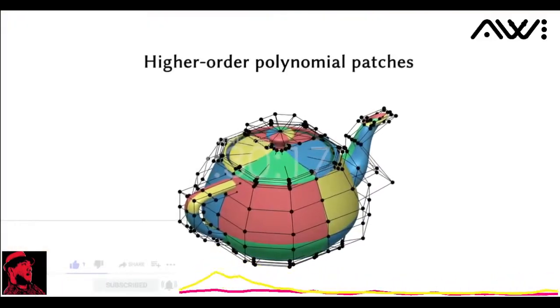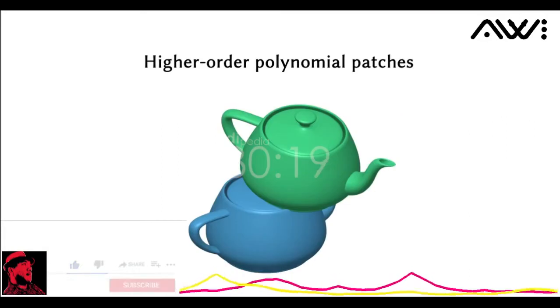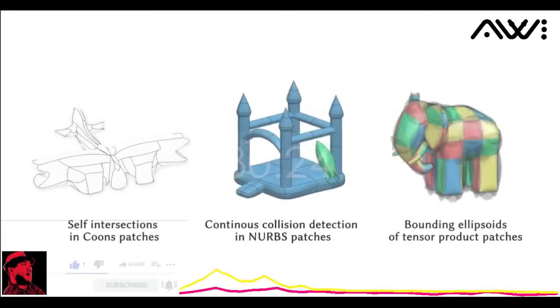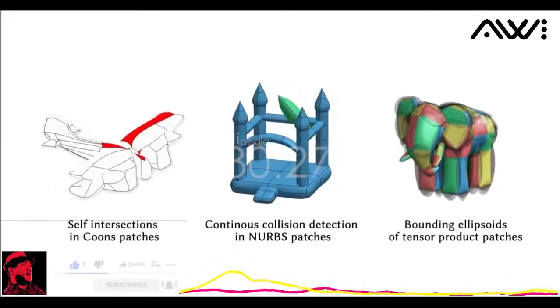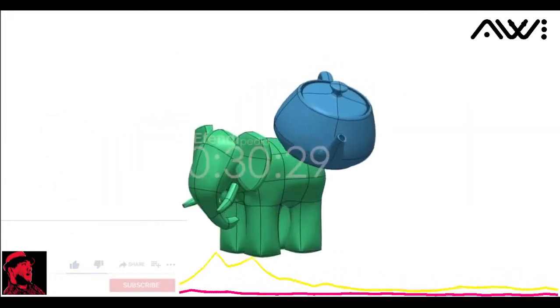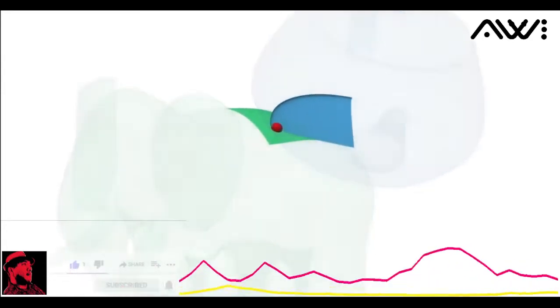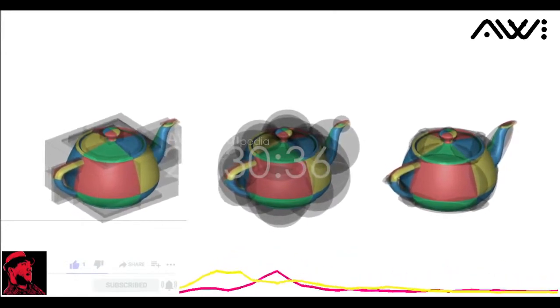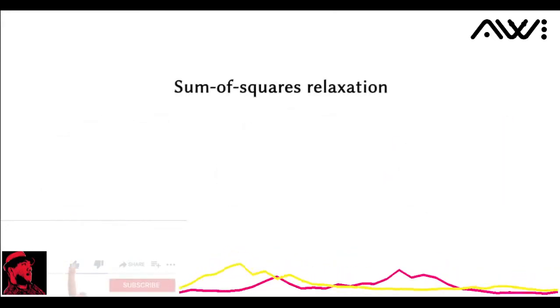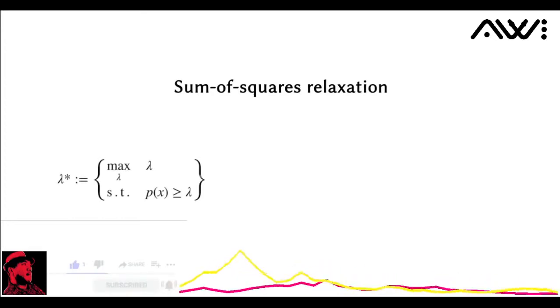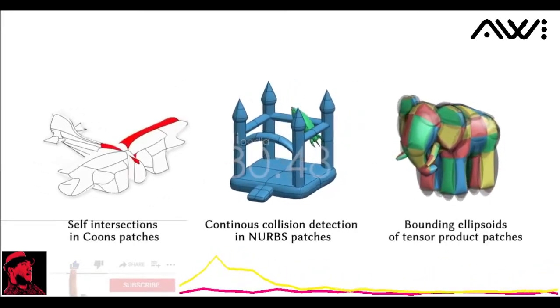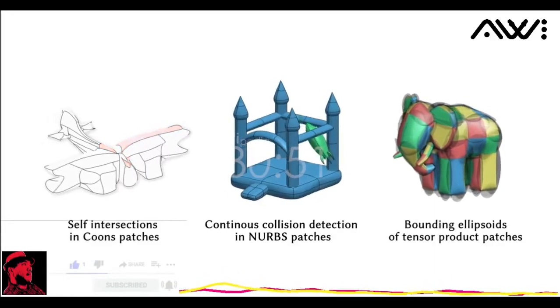Higher-order polynomial patches are widely used in geometry processing, but computing core geometric operations, like this intersection, remains challenging on these patches. We provide a framework for computing many of these operations robustly and exactly, so we can solve problems like this one, where we want to prevent the teapot from colliding with the elephant. Plus, we can compute some minimal bounding volumes to speed this up. We're able to robustly solve all of these problems and more using a powerful tool called sum of squares relaxation, which takes a hard-to-solve polynomial optimization problem and relaxes it into a convex problem, which can be solved efficiently. Come to our talk to learn more about the beautiful math behind SOS relaxation and how you can apply it to your own optimization problems.